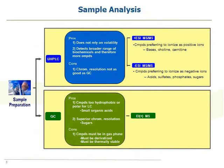To give you an idea, every sample that comes in we run using three different analytical methods. We use two LC-MS methods and one GC-MS method. The reason why we do this is that we need to diversify our methods so that we can detect more compounds. It's really as simple as that.